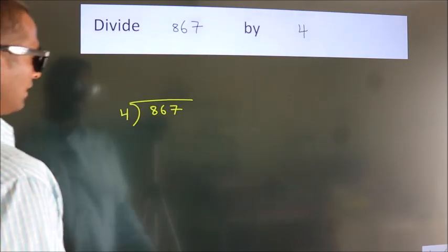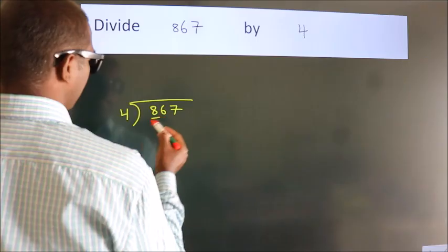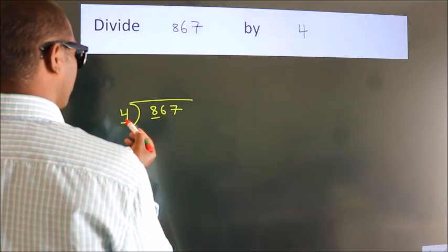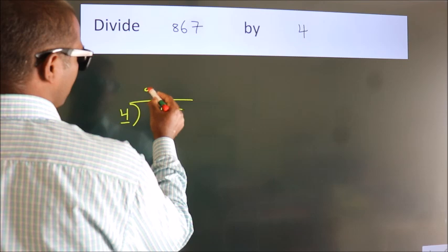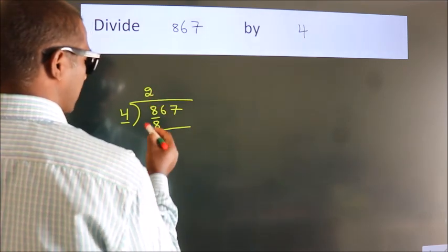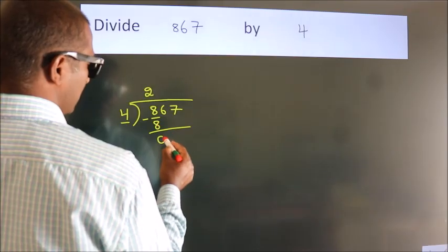Next, here we have 8, here 4. When do we get 8? In the 4 table: 4 twos are 8. Now we should subtract. We get 0.